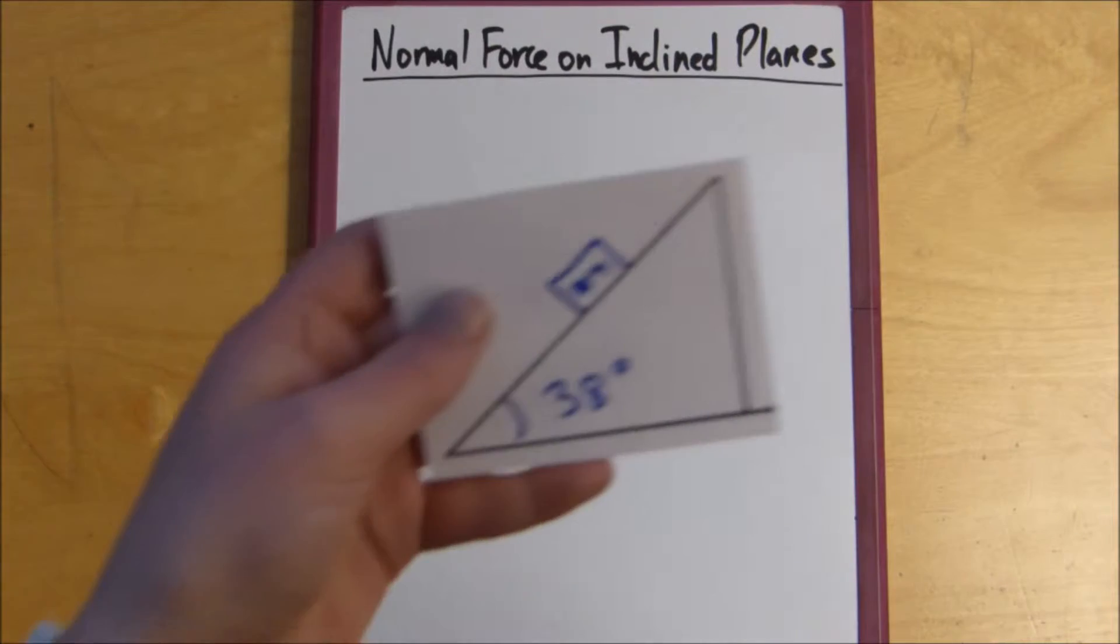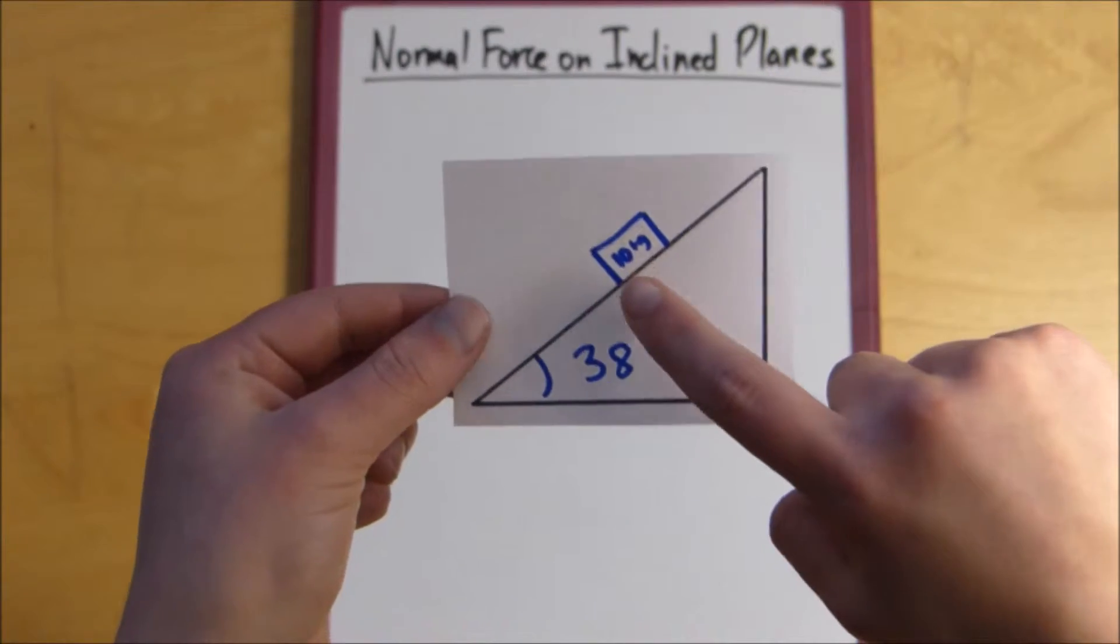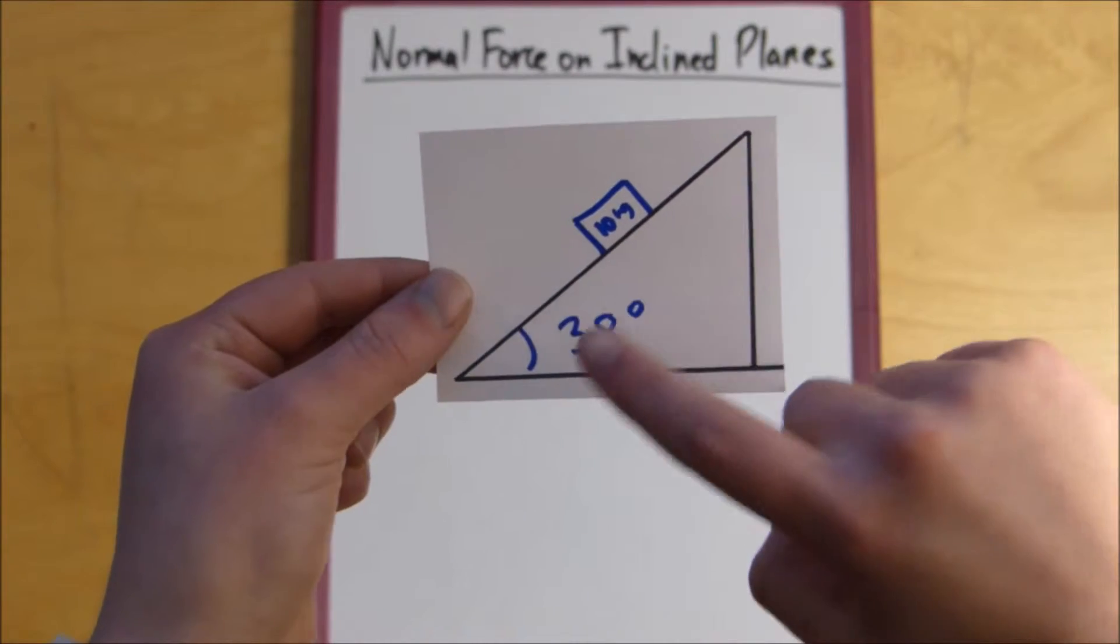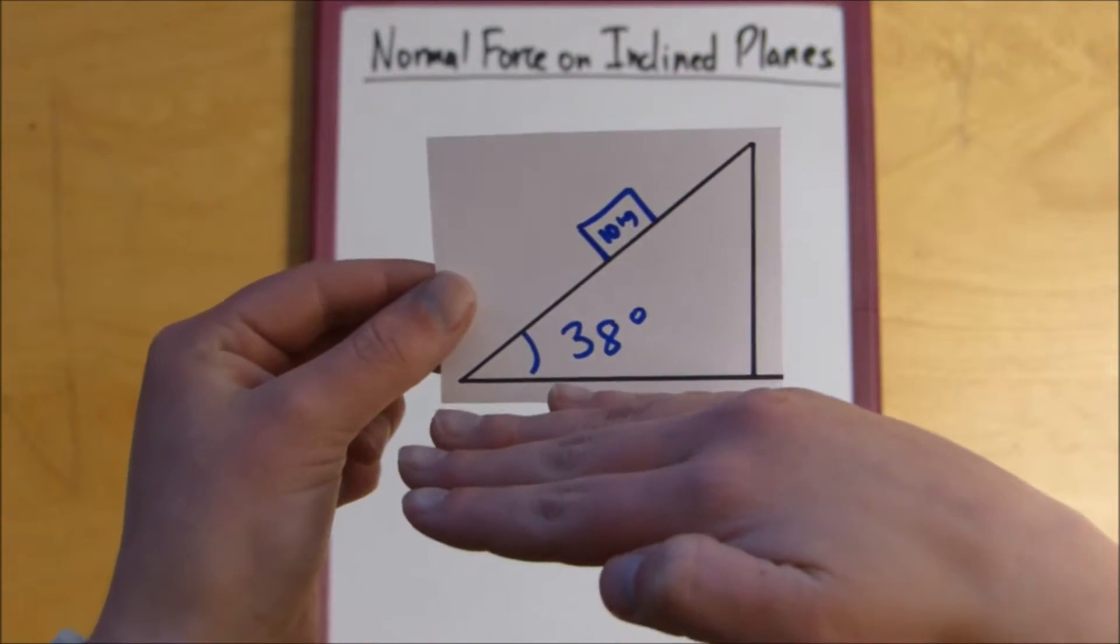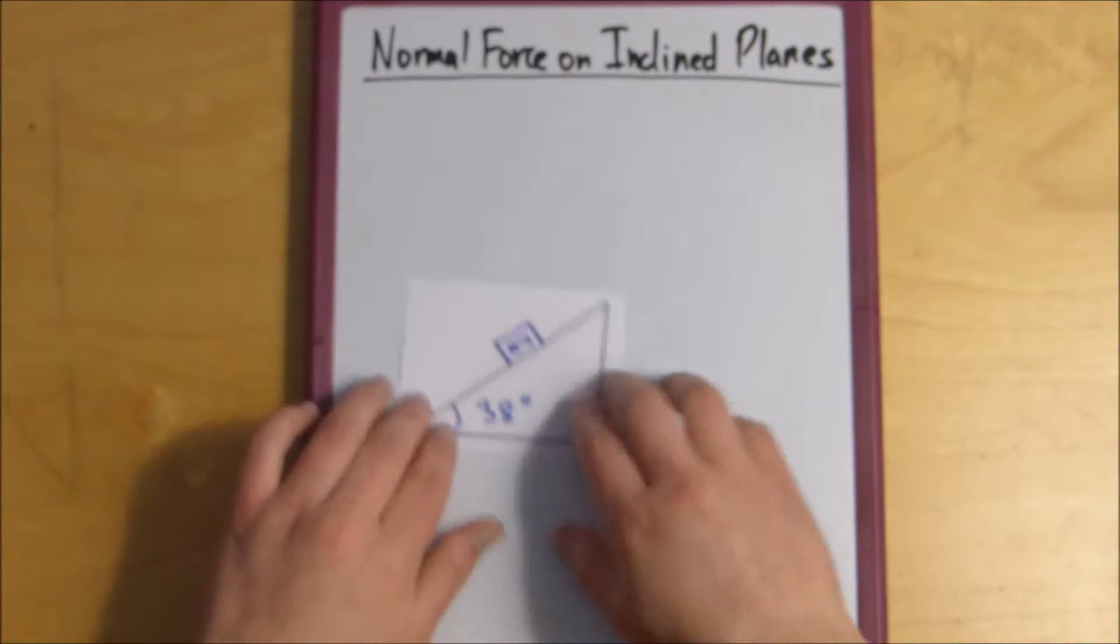So what I did is I drew a little diagram of this situation. We've got our 10 kilogram mass right there, and then we have our surface inclined 38 degrees from the horizontal.